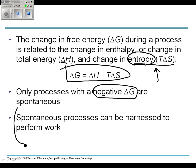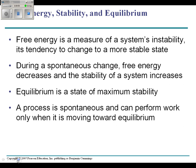Only processes with a negative delta G are spontaneous or will happen. Spontaneous processes can be harnessed to perform work. We're looking for things that have negative delta G in order for us to do something. For me to move my arm, there has to be a chemical reaction. For that process to be spontaneous, it has to have a negative delta G.